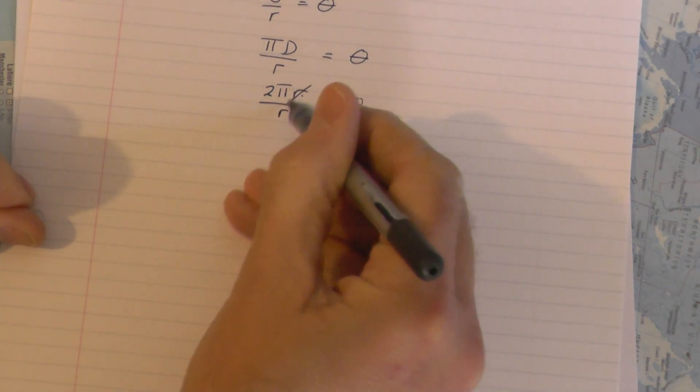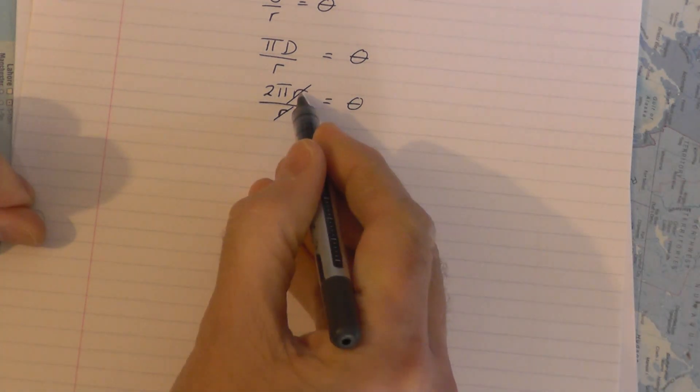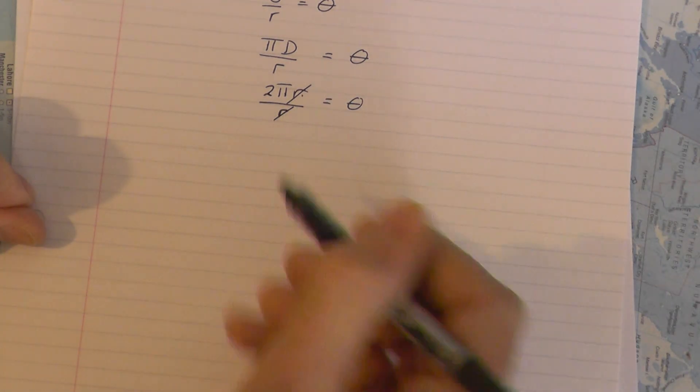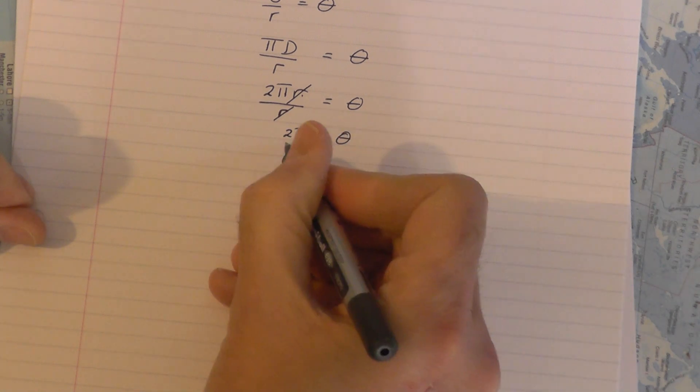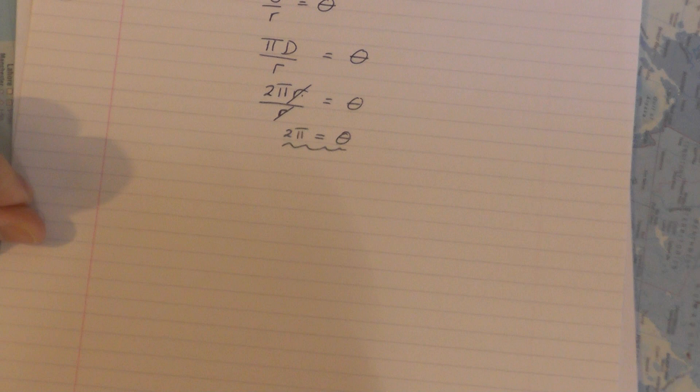This is a fraction, radius and radius can cancel, divide by R you get 1, divide by R you get 1. You are left with an answer that 2π is the size of the angle for a circle in radians.